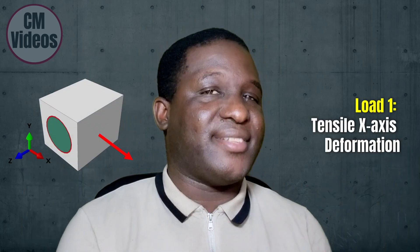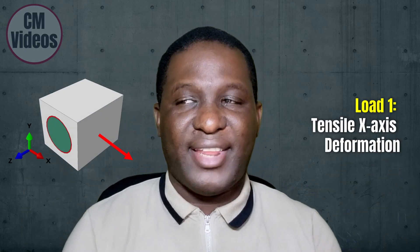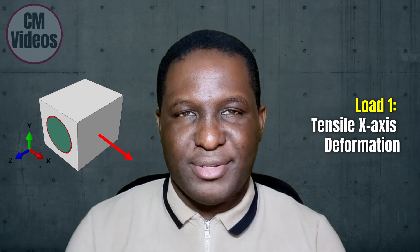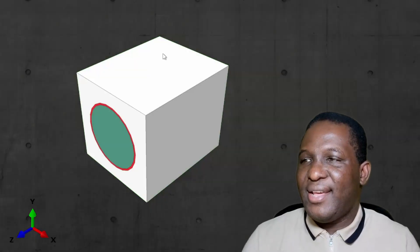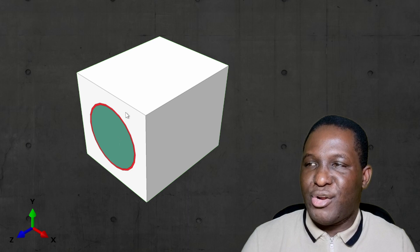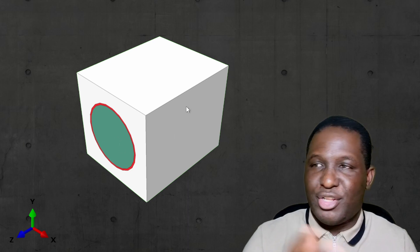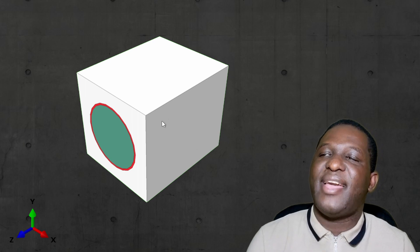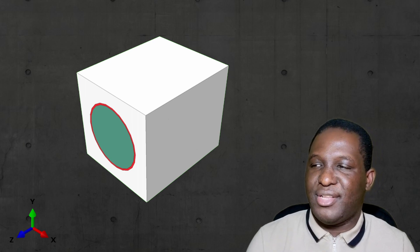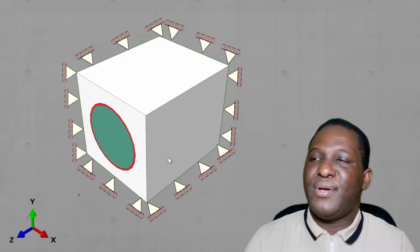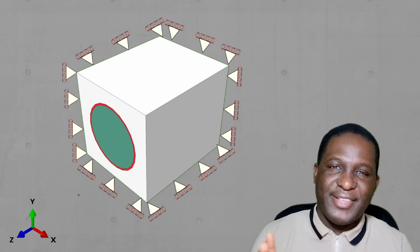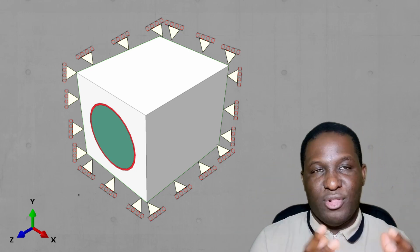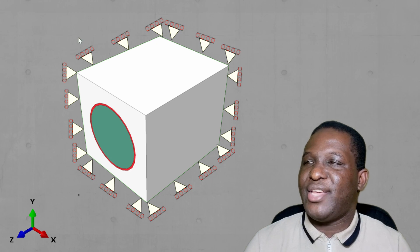How do you set up a tensile deformation in the transverse x-axis on a unidirectional composite? Looking at a picture that captures this, we have the unidirectional composite with the fiber and an interface region around it. We want to load it in the x-axis according to the reference frame given, so the first thing is to apply some representative loading condition as shown.